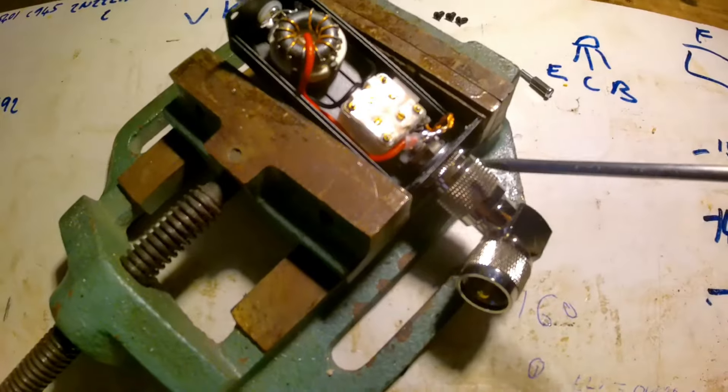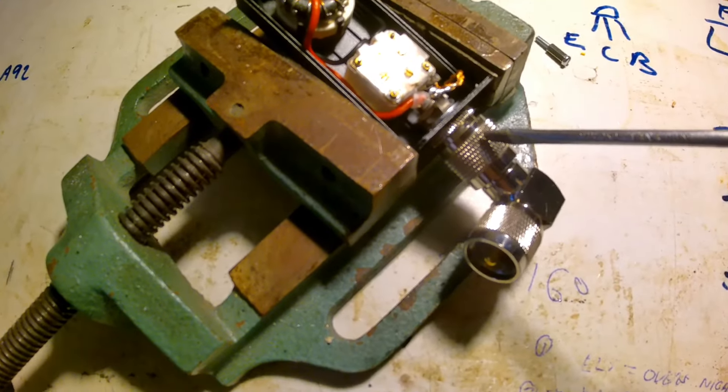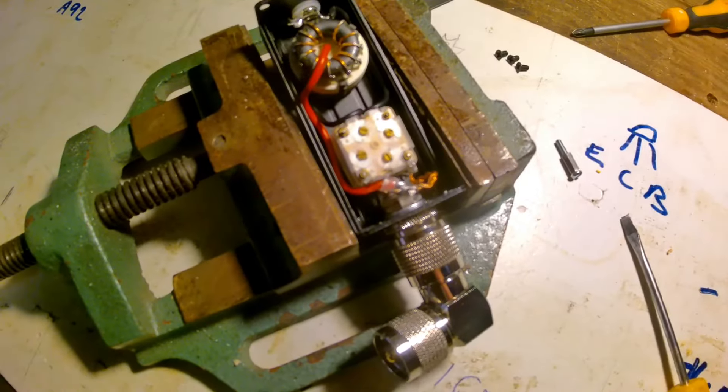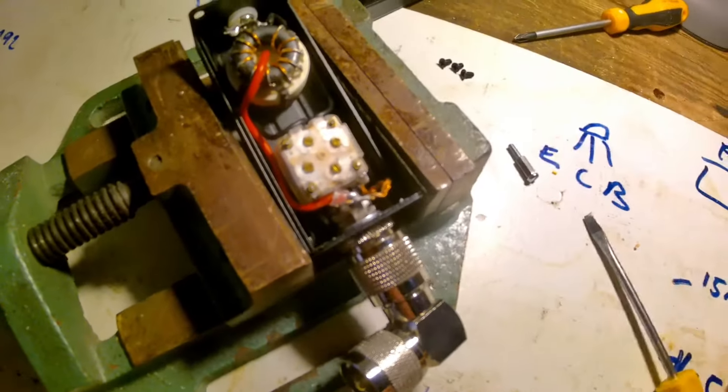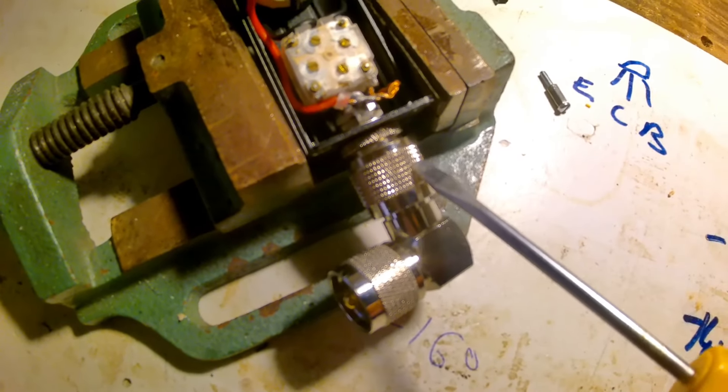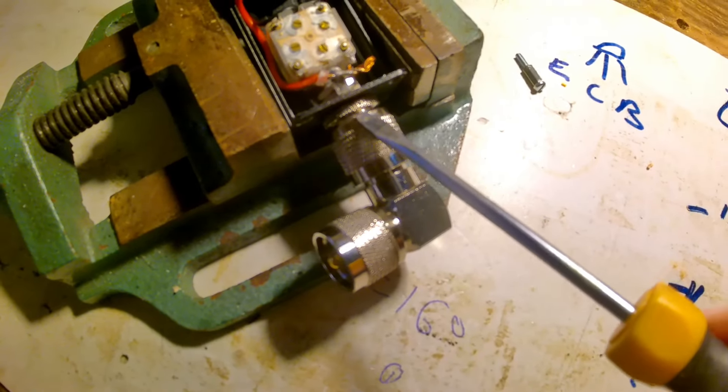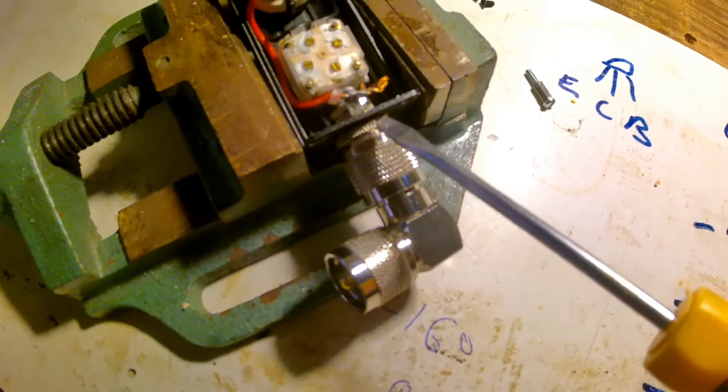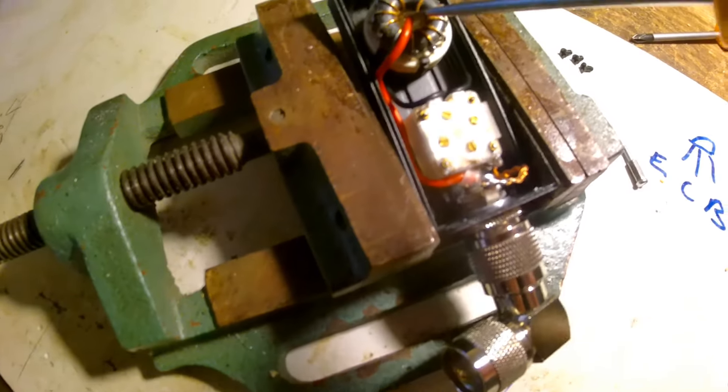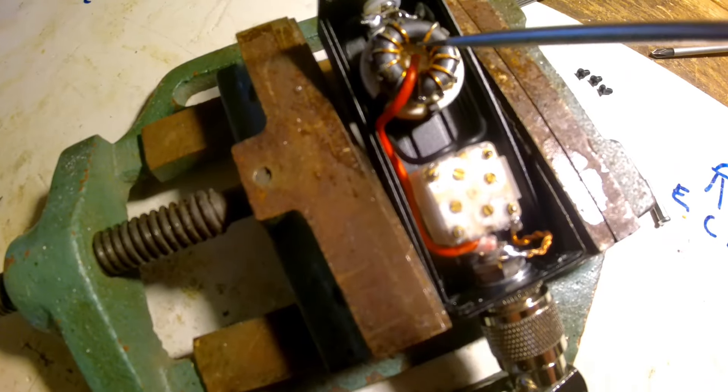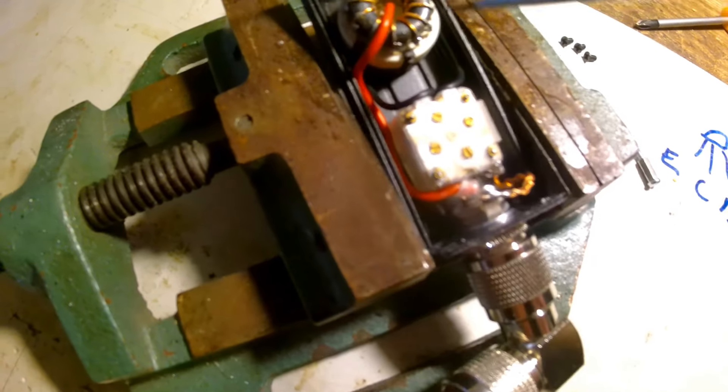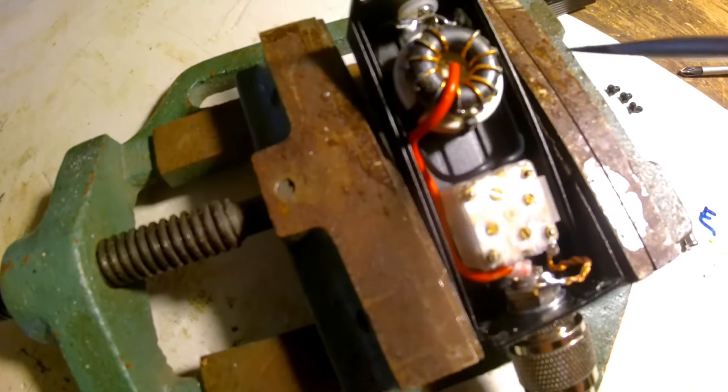From this socket, hopefully it's not glaring too much, the center conductor or the center connection of this socket here goes to the center pin of the switch. I've got a red wire here, I think it was originally black. You can see that.